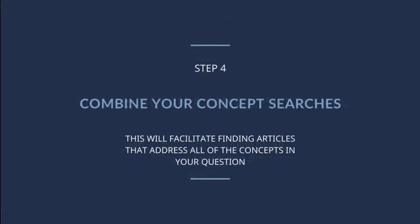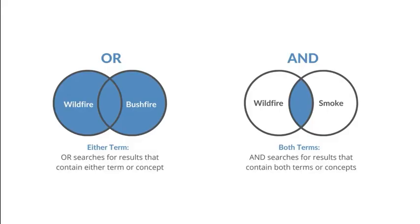Now that we have searched each element or concept in our question individually, it's time to proceed to step 4: combining our concept sets with AND. Let's briefly discuss combining search terms or sets with ORs and ANDs. OR is used when you want either term or concept in your results. AND is used when you want all the search terms or concepts in your results. We've already used OR to combine synonyms and MeSH terms. Now we'll use AND to combine the individual concept searches because we are looking for articles that address all of our concepts.